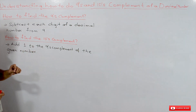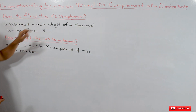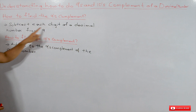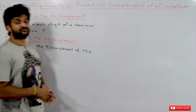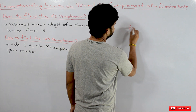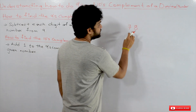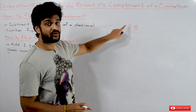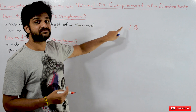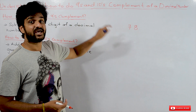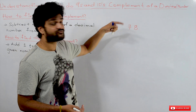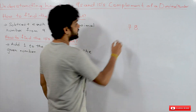So coming to this class — how to do the 9th complement. It's very simple. The 9th complement is found by subtracting each digit of a decimal number from 9. For example, if you have a decimal number 78, we have to find the 9th complement of this number. Subtract every digit of the decimal number from 9.